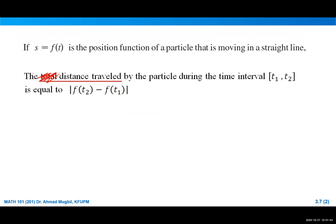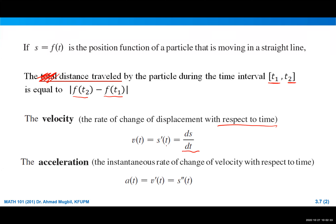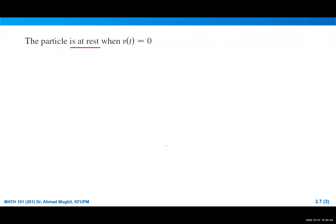The distance traveled from time T1 to time T2 is the absolute value of the position function at T2 minus the position function at T1. It is always positive, which is why we use the absolute value. Velocity is the rate of change of displacement with respect to time, so we differentiate with respect to T. Acceleration is the instantaneous rate of change of velocity with respect to time — it is the second derivative of the position function or the first derivative of the velocity function.